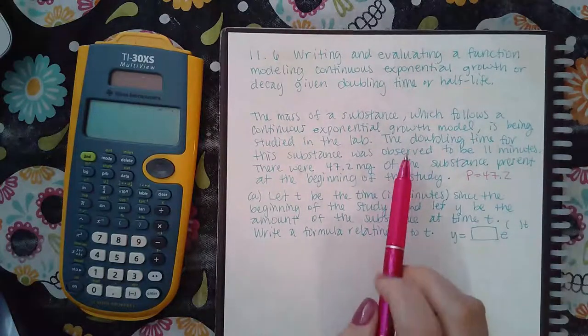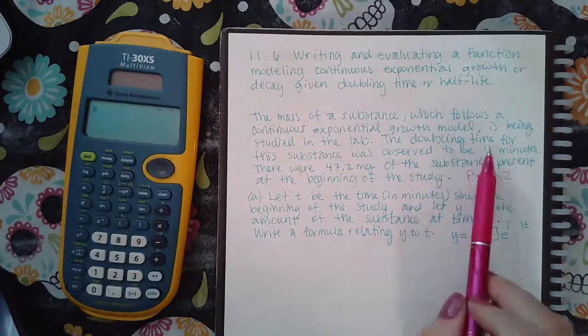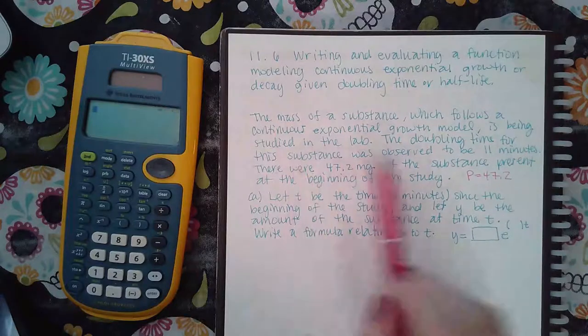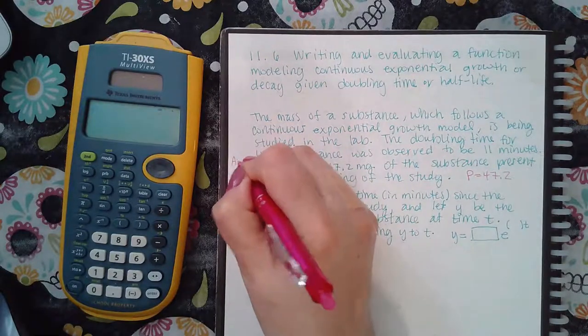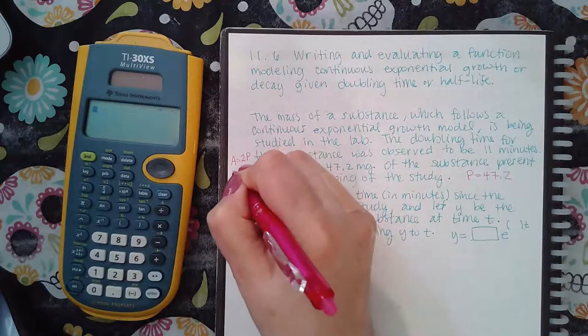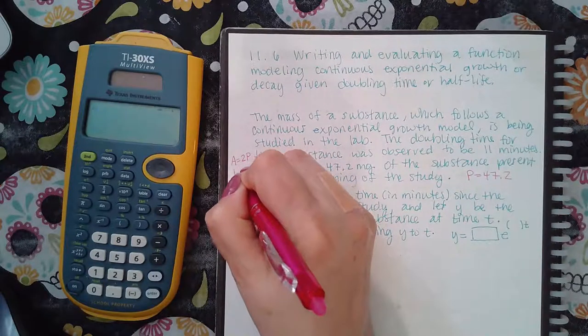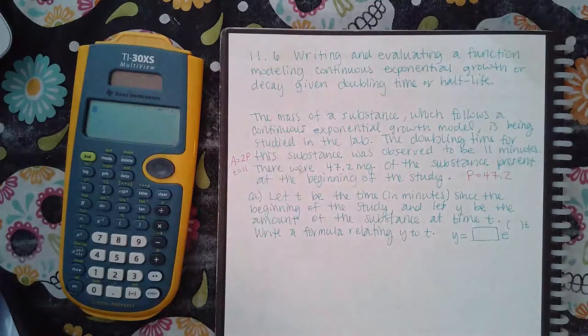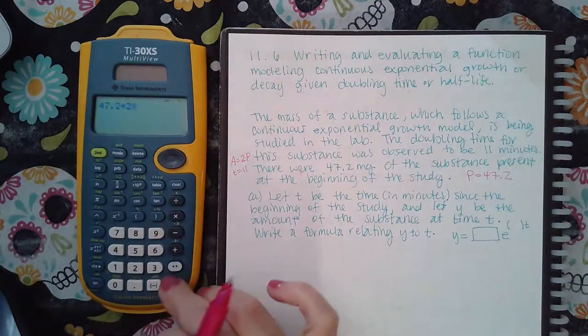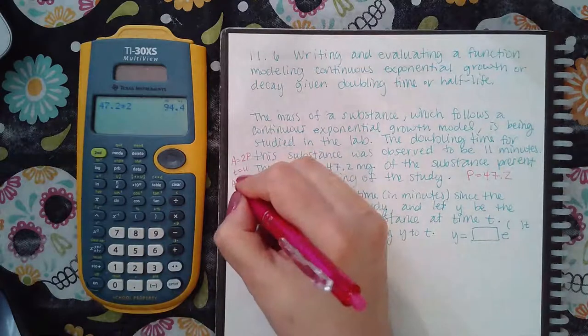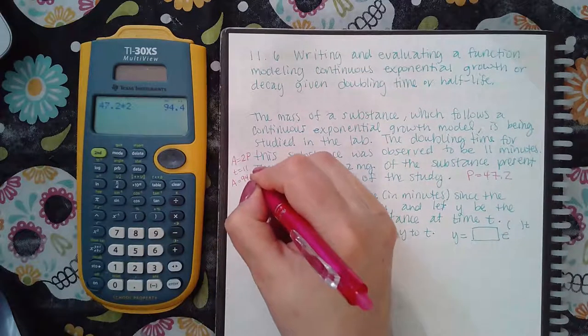And I already know that the doubling time is 11 minutes. So that means when the A equals 2 times the P, that happens when the T is equal to 11 minutes. And what is 2 times the P? 47.2 times 2. So in 11 minutes, A will equal 94.4.